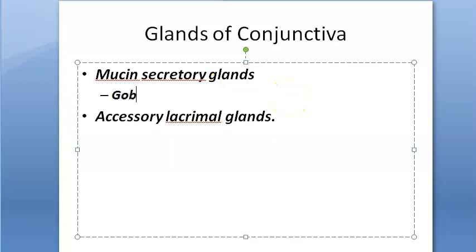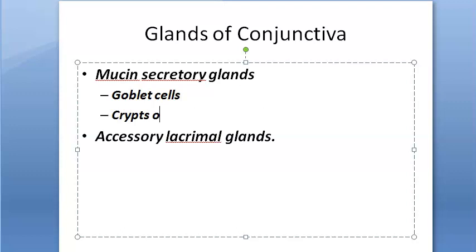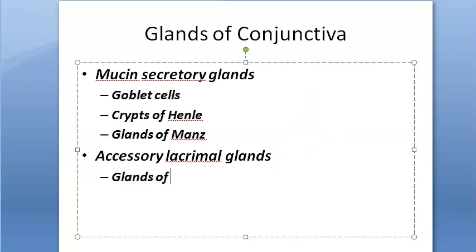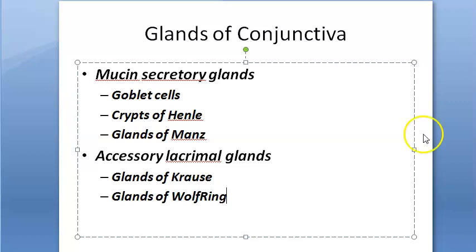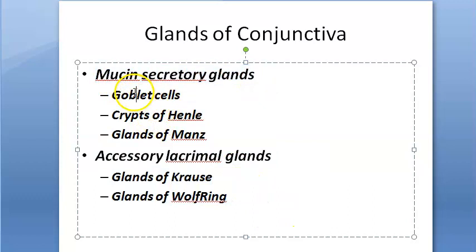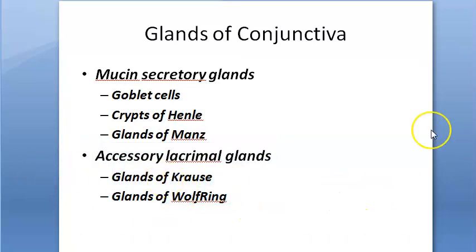Under mucin secretory glands you have goblet cells, which secrete mucin; crypts of Henle; and glands of Manz. Under accessory lacrimal glands you have glands of Krause and glands of Wolfring. So to summarize: mucin secretory glands — goblet cells, crypts of Henle, glands of Manz; accessory lacrimal glands — glands of Krause and glands of Wolfring.